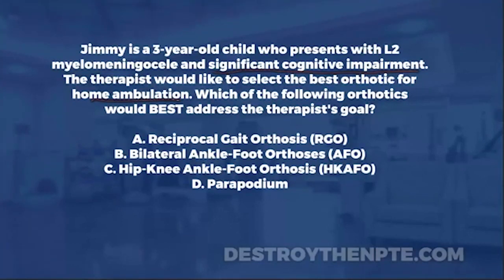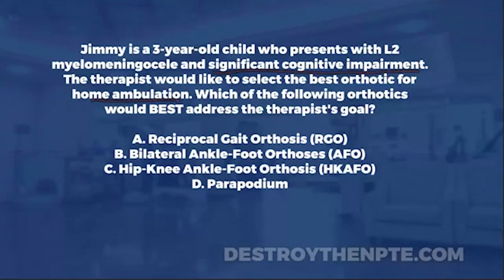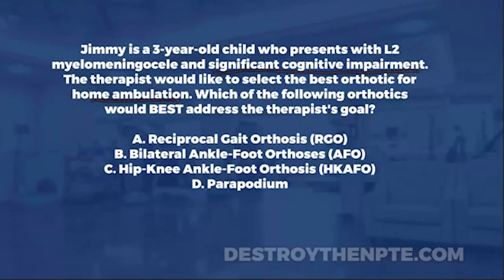Let's look at our answer choices. Answer A is the reciprocal gait orthosis, or RGO. Answer B is bilateral ankle foot orthoses, AFOs. Answer C is hip knee ankle foot orthosis, HKFO. Answer D is the parapodium. Looking at the RGO first — it is energy costly, but it is used for patients with spina bifida. The fact that he's three years old fits with the RGO, and an L2 myelomeningocele fits as well. The RGO can be used for home ambulation.